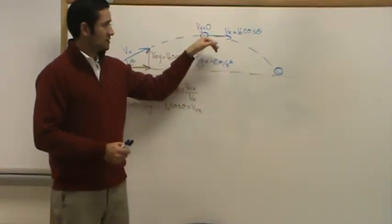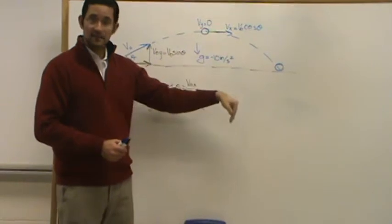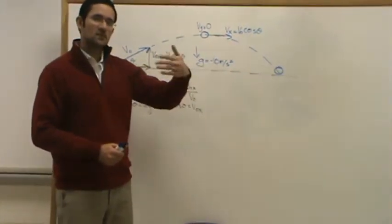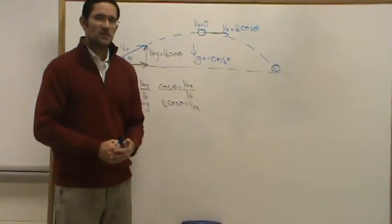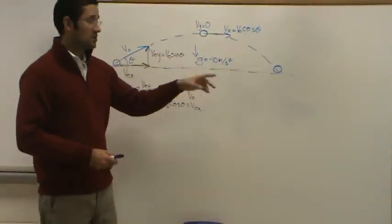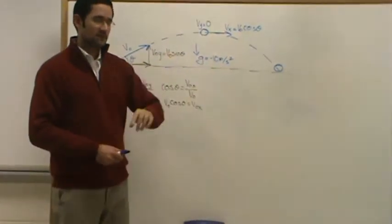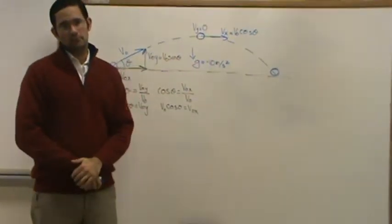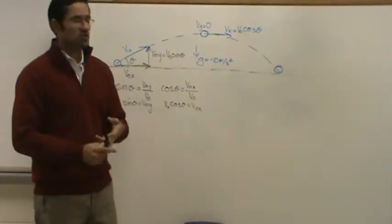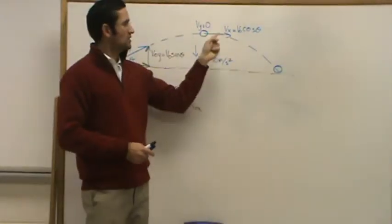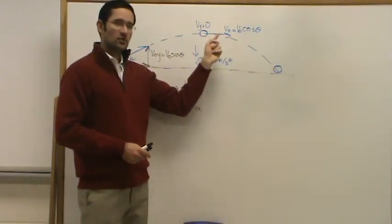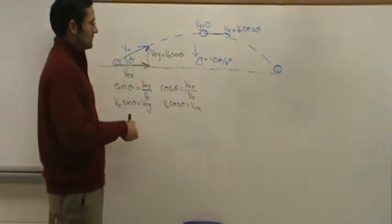The vertical velocity will go from zero to negative 10 meters per second — negative only because it's downwards — then one second later negative 20, then negative 30, then negative 40, increasing by 10 meters per second every second. The horizontal velocity will stay the same throughout, because we're in a vacuum — there's no air resistance, no friction, no forces or accelerations impacting us on the x-axis.